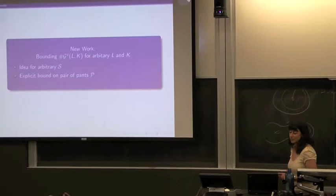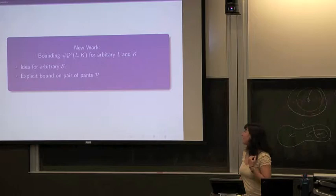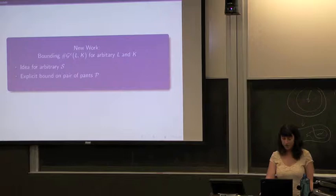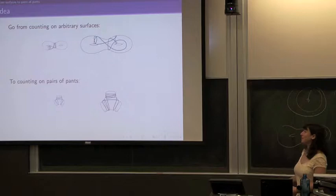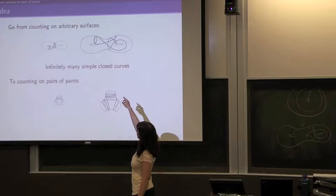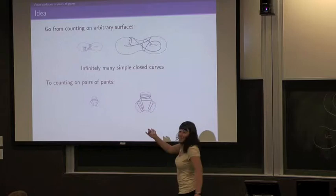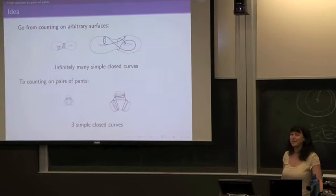The idea is to bound the size of GC(L,K) for arbitrary L and K. I'll give an idea for how you might do this for an arbitrary surface S, and show an explicit bound for a pair of pants. The idea is to go from counting on an arbitrary surface to counting on a pair of pants. There are infinitely many simple closed curves on an arbitrary surface, but just three on a pair of pants — we like these pants.